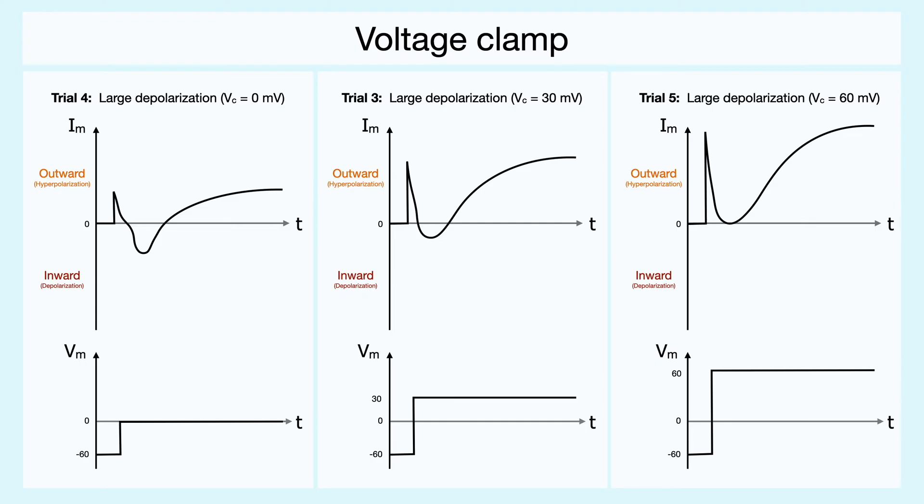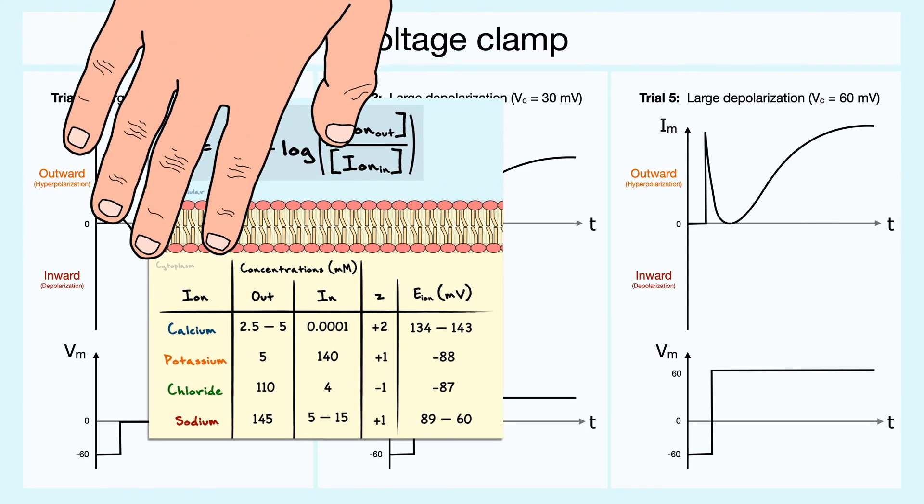To understand why this happens, recall that the equilibrium potential of sodium is about 60 mV. Hence, when the axon is clamped at 60 mV, there is no net flux of sodium, which indicates that the inward current is most likely controlled by sodium influx.